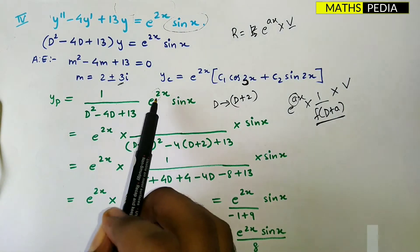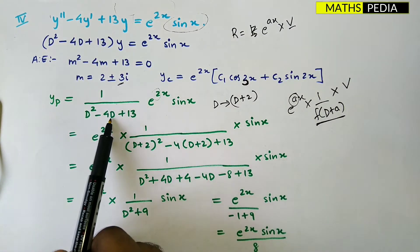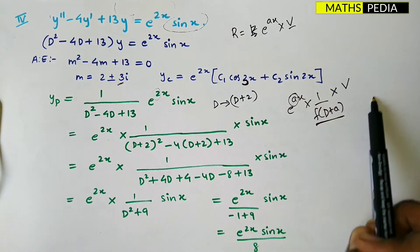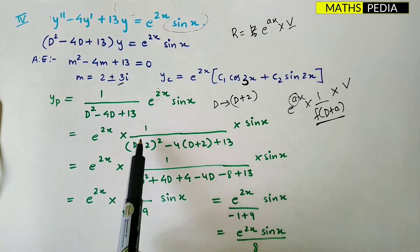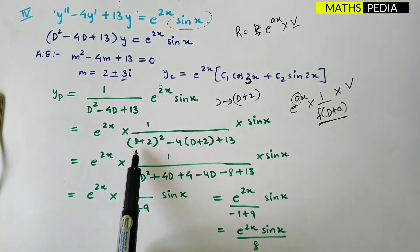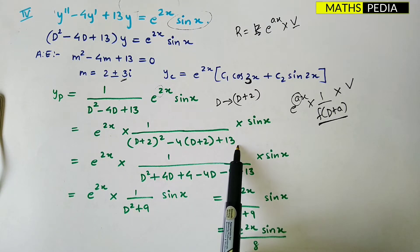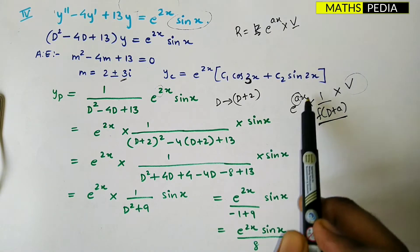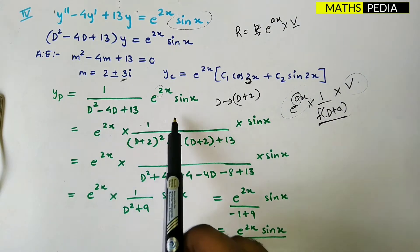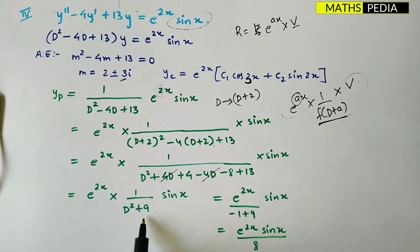So we have 1/f(D) into e^(ax) into sine x, which means 1/f(D) into the RHS part. Now we write: e^(ax) into 1/f(D+a). I replace D with D+2 here, and also D with D+2 in the 13 term — you write D+2 plus 13 — into v. After writing this, simplify: cancel whatever cancels, and finally you get 1/(2D² + 9).